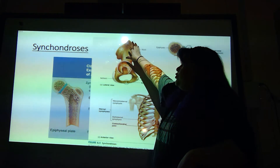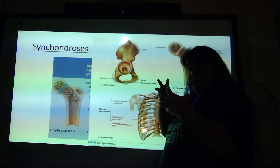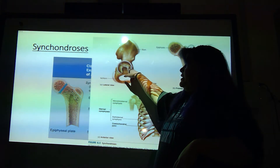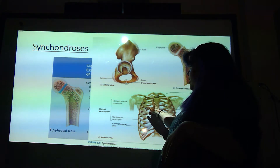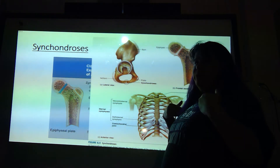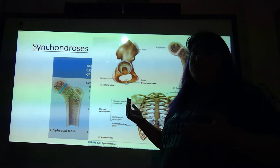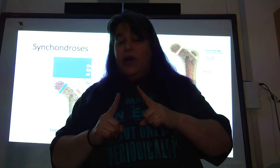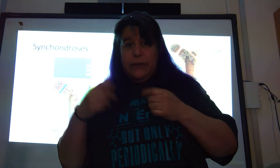Remember I told you that the ilium, the ischium, and the pubis were actually three separate bones that fuse together? Well, this right here is that piece of cartilage that's there for a while. The costal cartilage between the rib and the sternum — this is hyaline cartilage. And technically it's two bones being held together, so technically it is a synchondrosis.